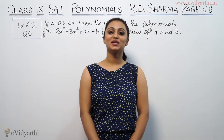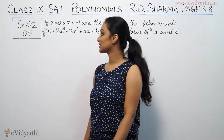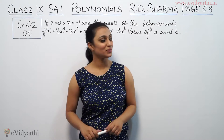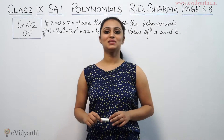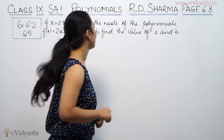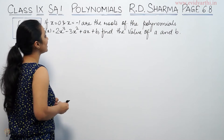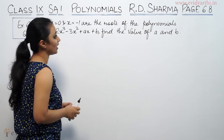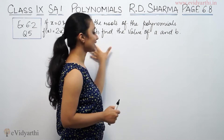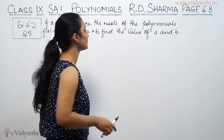Hi, this is Khushbu with another question on polynomials. This is question number 5 from exercise 6.2, page number 6.8 of Adi Sharma. It says: if x equals 0 and x equals minus 1 are the roots of the polynomial f(x), find the value of a and b.